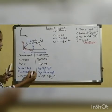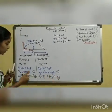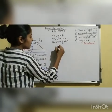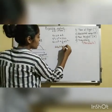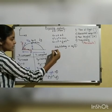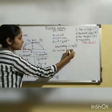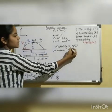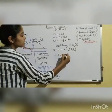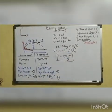Substituting into equation 2: vy = 0, so 0 = u sin theta − g·(T/2). Solving this gives T = 2u sin theta / g. This is the derivation for time of flight.